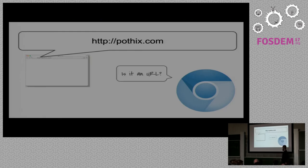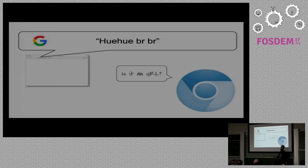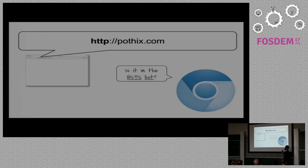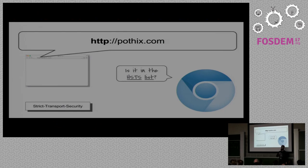The first question Chromium will ask is: is it really a URL? It may look silly, but you know you can type whatever you want in the address bar and it will just search on a search engine for you. We'll assume it is a URL and continue to the next question: is it in the HSTS list? HSTS means HTTP Strict Transport Security — Chromium has a hard-coded list of websites that must be accessed via HTTPS first. Every server can also send a strict transport security header, so the list is also dynamic. In this case, we'll continue with HTTP for a while.